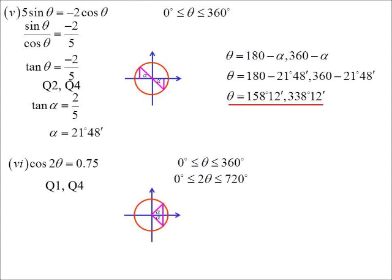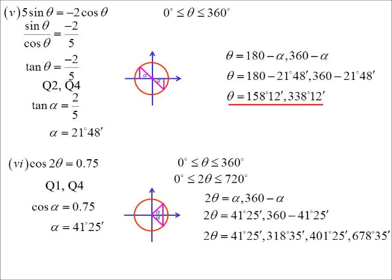So the first and the fourth, still all the same. Acute angle, 41 degrees 25. First quadrant or the fourth quadrant, 360 minus. But this time, we add 360 to both of those answers because we're going around twice. So 41.25, 318.35, 401.25, 678.35. Now, it's the last step we divide by the two. Divide everything by two. We've got four answers and they all lie between 0 and 360.